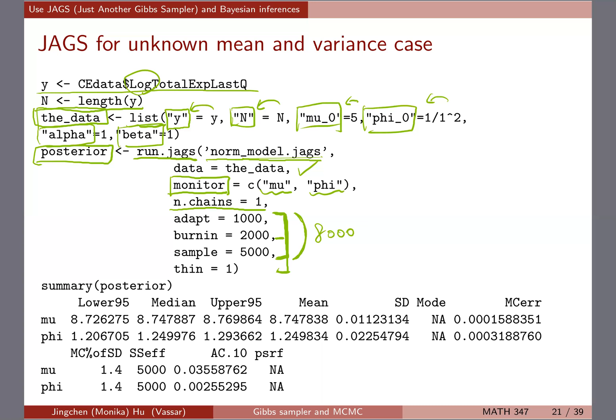Once you run it, you use the summary command and you'll get a summary of the two parameters in the model. I'd suggest trying it out — the code is in the R script I shared, and you'll see a progress bar as JAGS runs. Using summary(posterior) gives you the summary of phi and mu. Note: if you only put mu in the monitor argument, nothing about phi will appear because you're not tracking it.